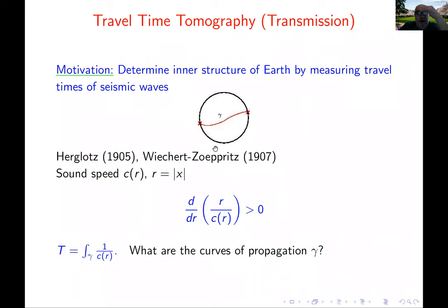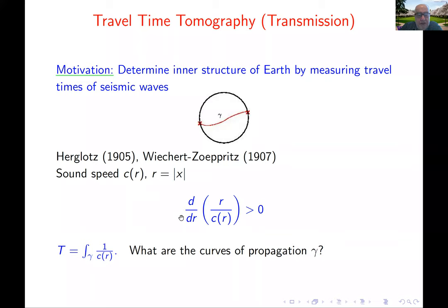To set up the problem and the motivation: the goal is to determine the inner structure of the earth by measuring the travel times of seismic waves. This problem was considered very early on in 1905 by mathematician Herglotz and later by geophysicists Wiechert and Zoeppritz — even before the Radon transform. The assumption was that the earth was spherically symmetric, with a sound speed depending on the radius, plus this condition that the sound speed increases with radius.